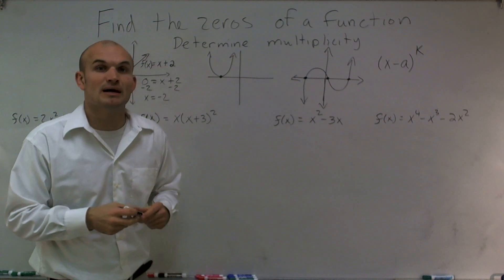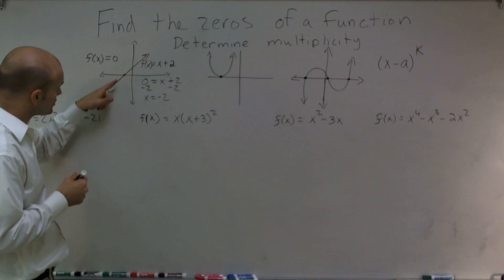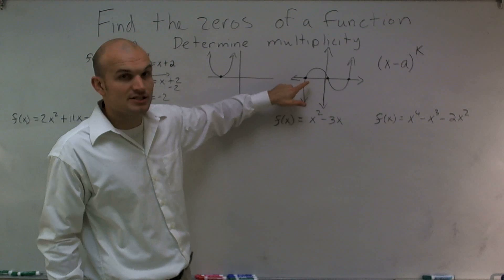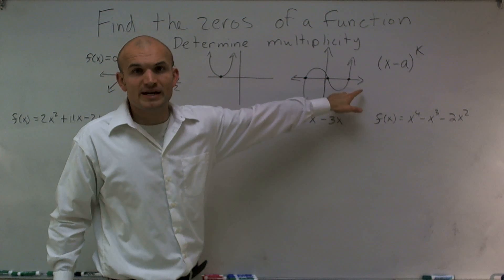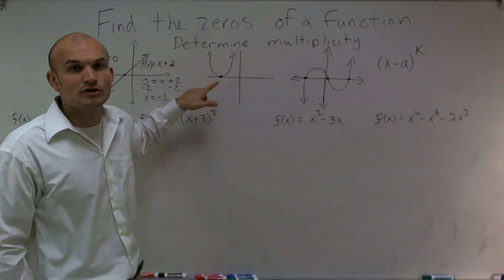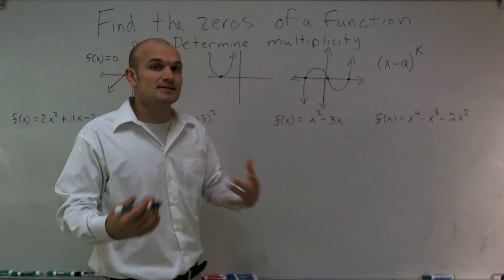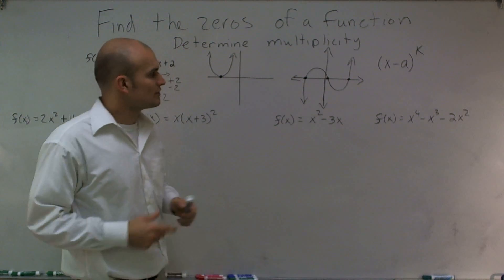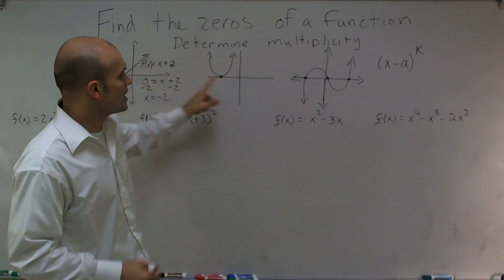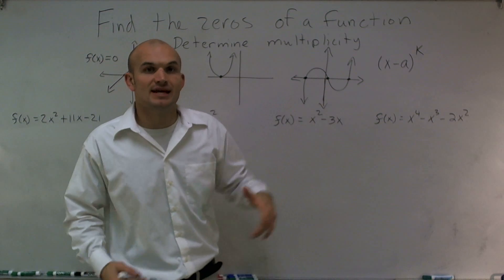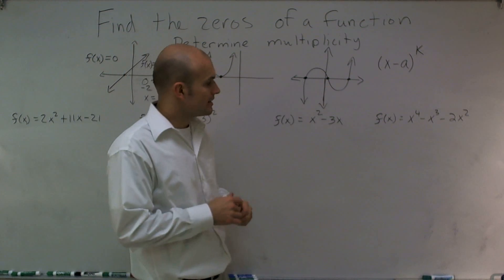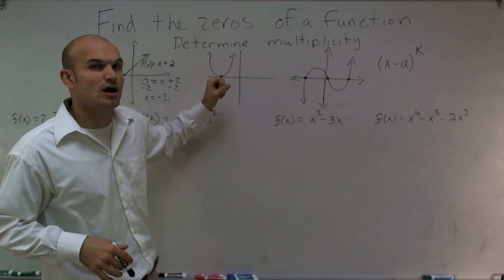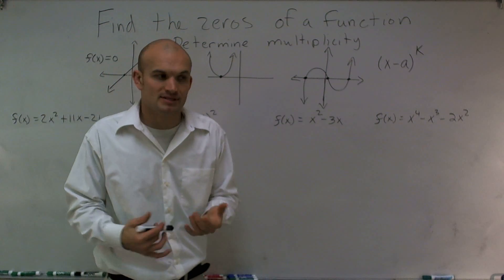The one thing I need to talk about is multiplicity. You see that this graph crosses once. You also see that this graph over here crosses three different times. But here the graph never crosses — it actually touches. When you have a graph that crosses at certain points, we say it has an odd multiplicity. And when you have a graph that touches your x-axis but does not cross, we say it has an even multiplicity.